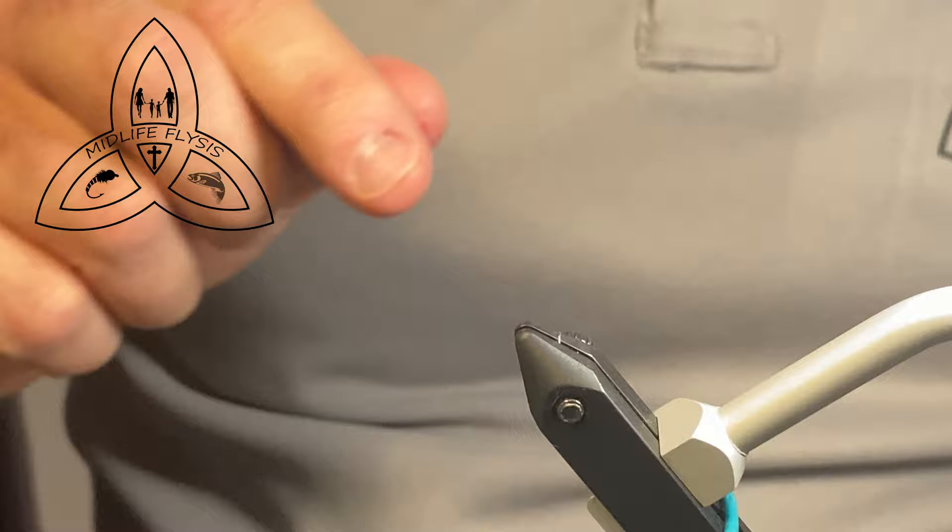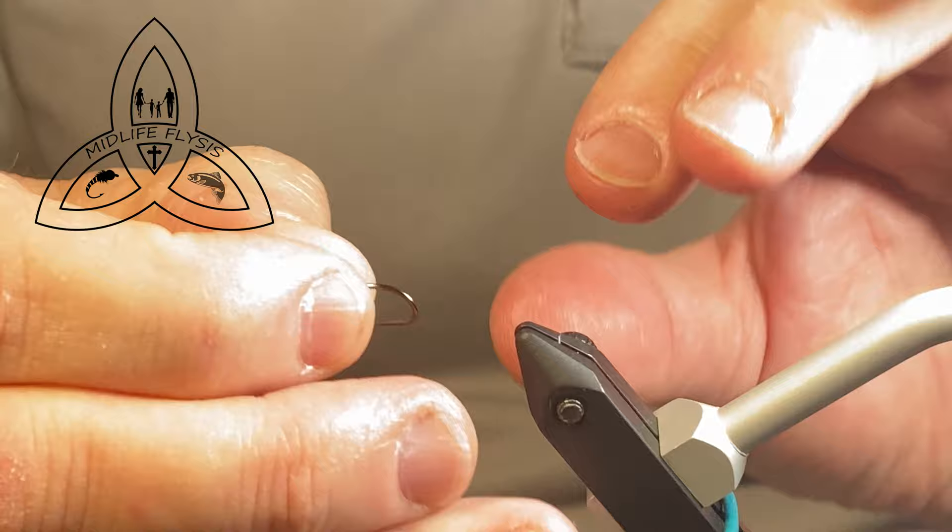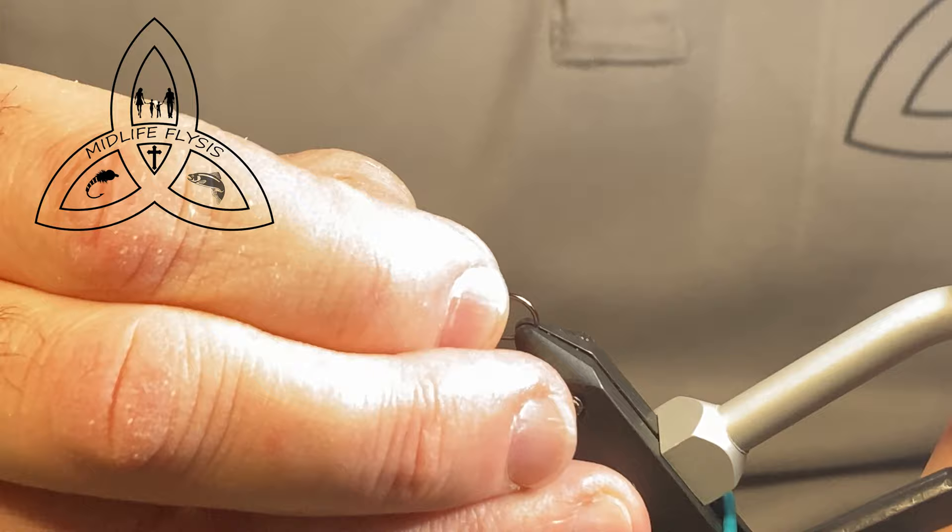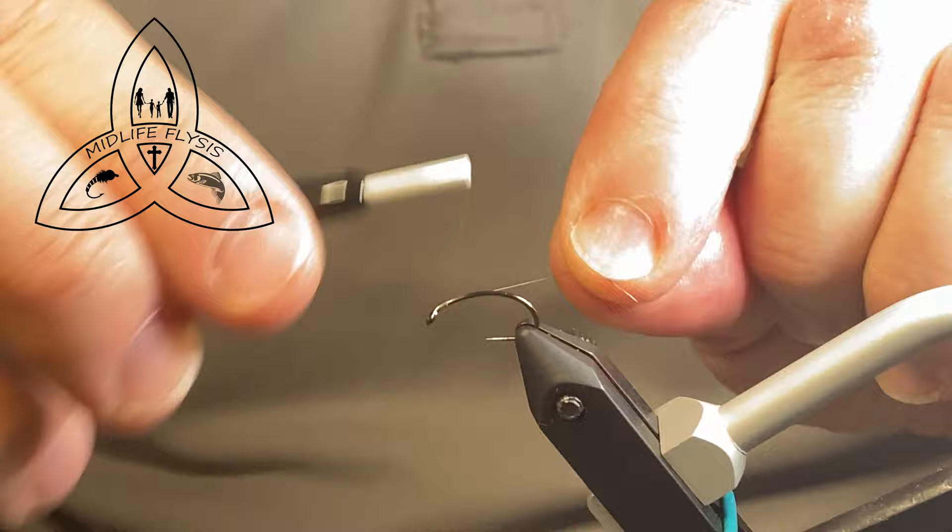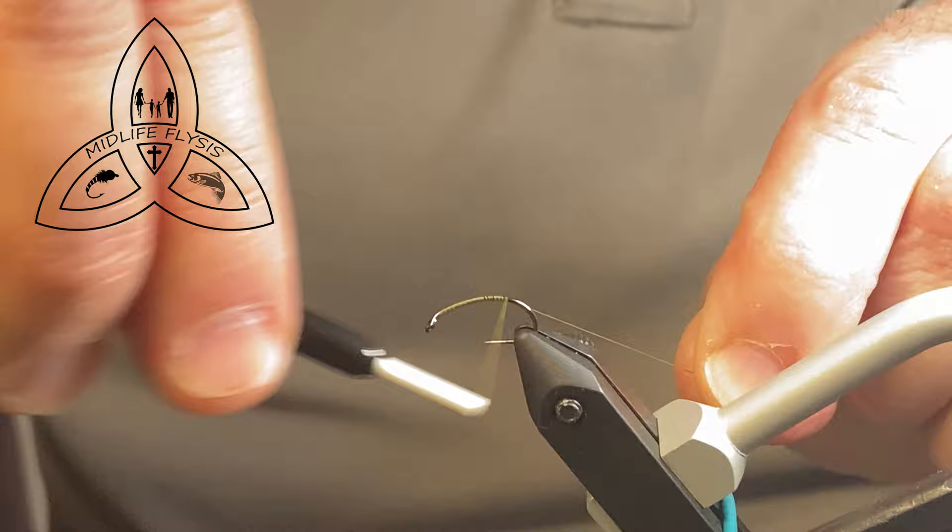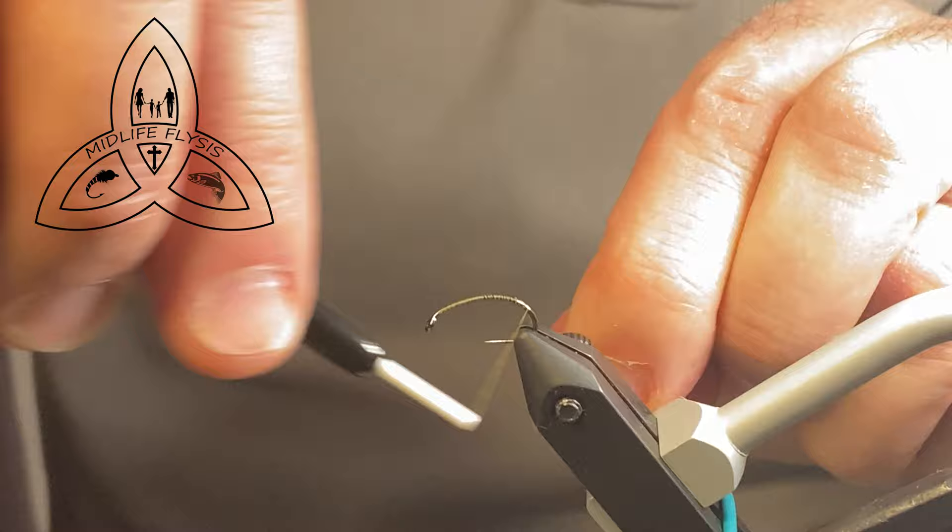So we'll take that one out, and we'll get the size 10 in the jaws of the new vise here. I'm going to be tying on 70 denier olive, and we'll just start it. I like to give the whole hook a good coating of the thread. Just helps to anchor everything in. You got to go all the way back partway down the bend.